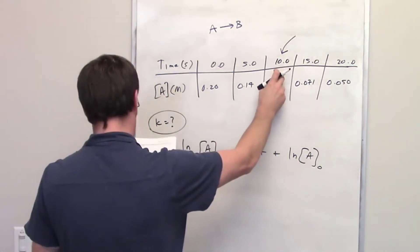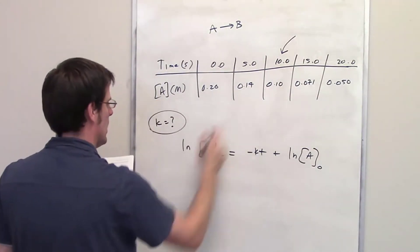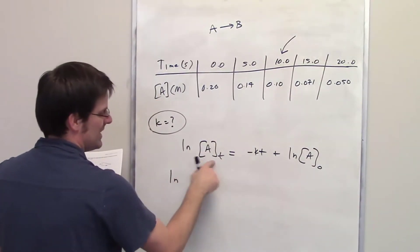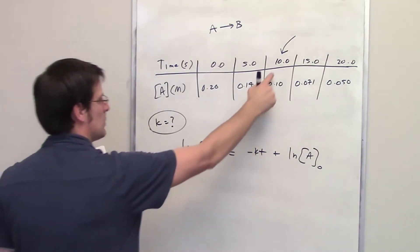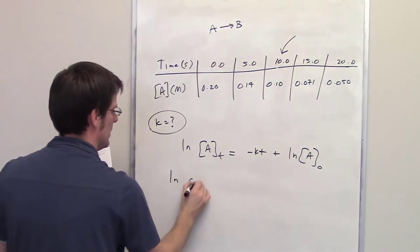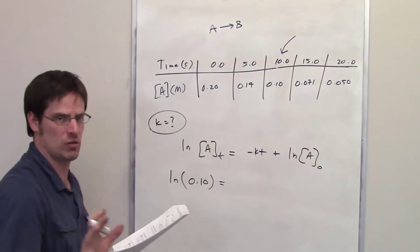So at t equals 10, what is the concentration of A? The concentration is 0.1. So down here, this term right here is the concentration of A at time t. So when t equals 10, the concentration is 0.1. So I'm going to throw in the ln of 0.1. You good so far?